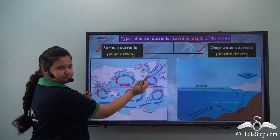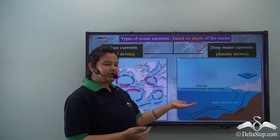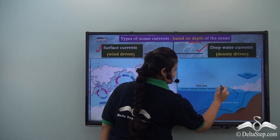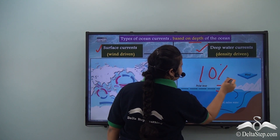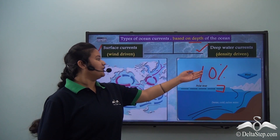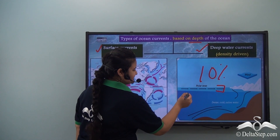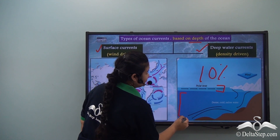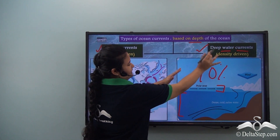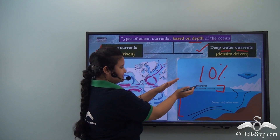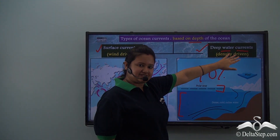Look at this map — it shows the surface ocean currents. If we look at the oceans, 10% of the ocean currents are surface currents, while the rest 90% are deep water currents. Surface currents are present at the surface, while at depth, mostly deep water currents are present.